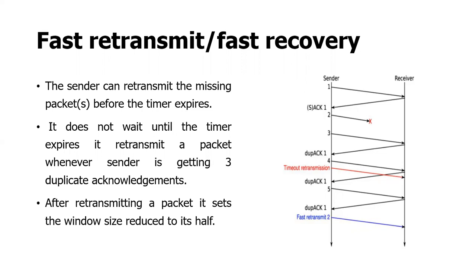It retransmits a packet whenever the sender is getting three duplicate acknowledgements. After retransmitting a packet, it sets the window size reduced to its half. Now, seeing this diagram, you can understand more clearly.